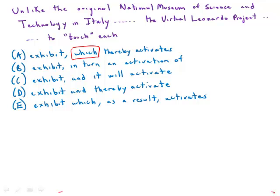Typically, 'which' would refer to the noun that it touches — here, it touches the exhibit. Well, the exhibit doesn't activate its own functions. What actually does the activation is the act of touching. But we can't have the word 'which' with an antecedent of a verb. It has to have an antecedent that is a noun, and that noun has to immediately precede it. So the 'which' is incorrect.